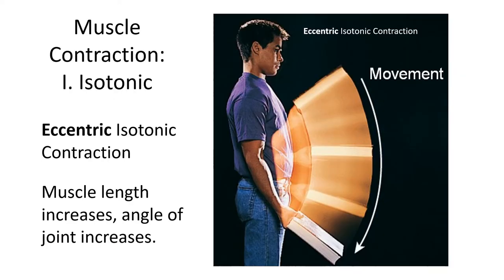In an eccentric isotonic contraction, we have movement occurring again and constant force or tension being generated by the biceps in this example, but the muscle is elongating and the angle of the joint is increasing. Looking at his joint, the angle gets larger as he drops this textbook. He's faced with the same resistance as when he was lifting it — the force of gravity pulling down on the book is the same. But in this case, he's resisting the drop of that book. As he does this in a slow controlled fashion, the tension within the muscle remains the same.